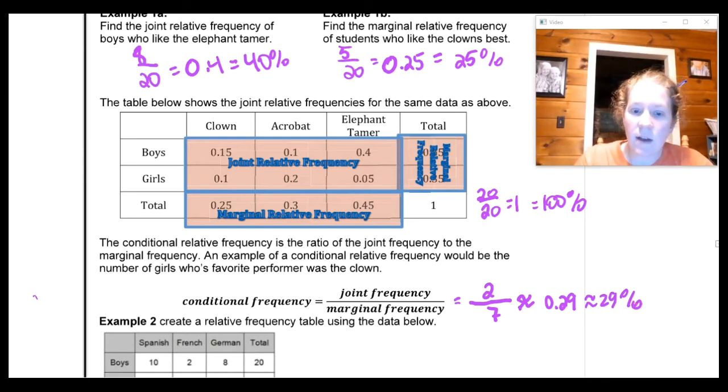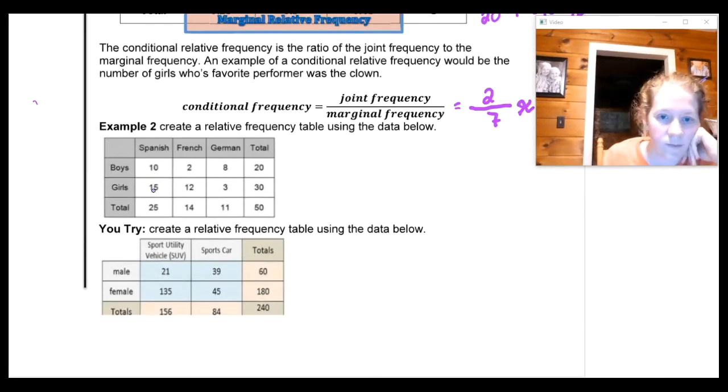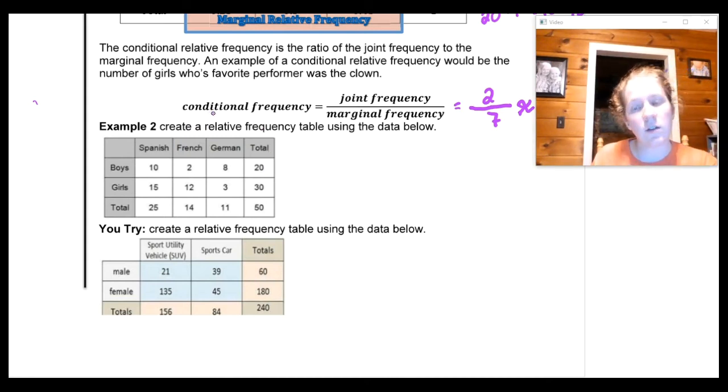To create a relative frequency table, all I have to do is go through and do all of my division. Now this just says create a relative frequency table. So if it doesn't say conditional relative frequency then you can assume that it's just a regular relative frequency, which means I'm going to divide each of these values by my grand total. So the number of students we're looking at here is 50. So I'm going to divide every one of these both the joint and the marginal values by 50. I'm going to pause the recording real quick and get all those answers and I'll show you what I've got and then you can check yourself.